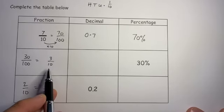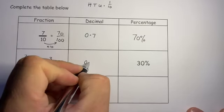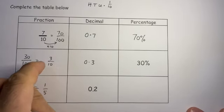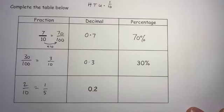Now because that's over 10, I can once again say that I have got 0.3 because that's three tenths means I've got three in the tenths column.